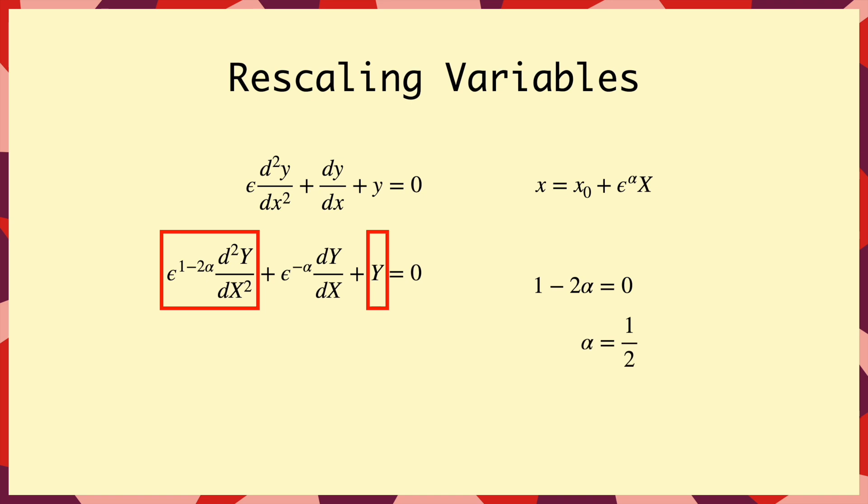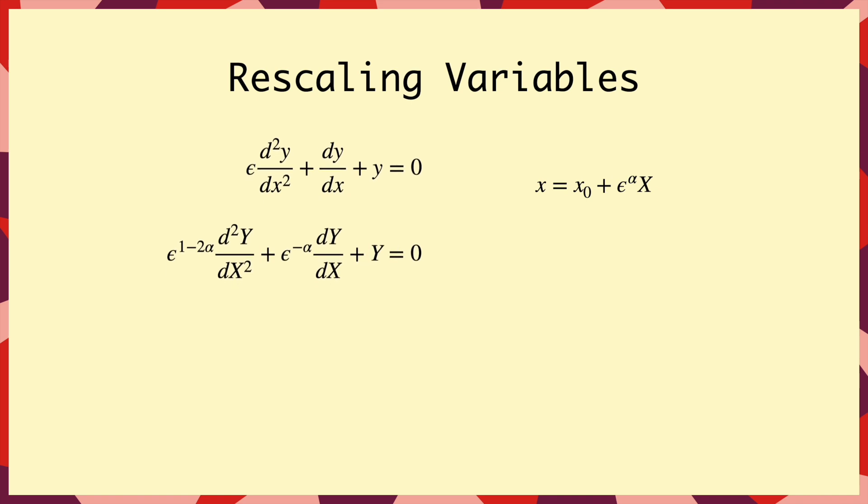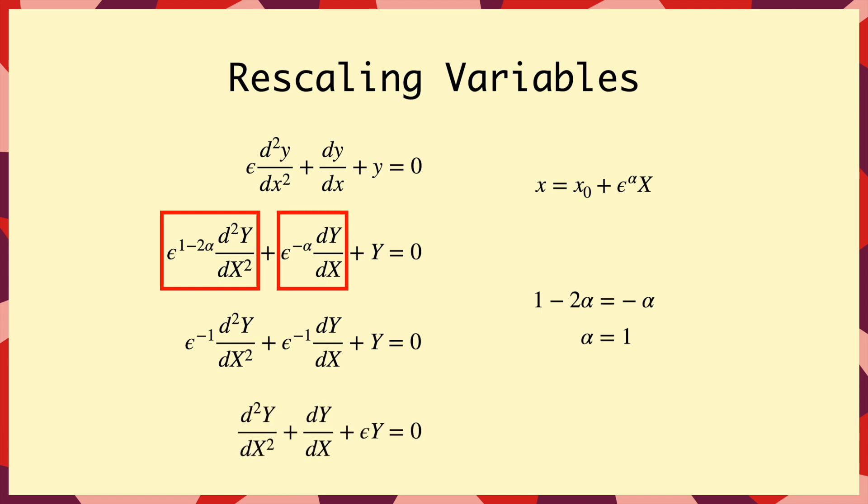But if we put that in, the other term now contains an ε^(-1/2). And since epsilon is small, ε^(-1/2) is big. So this term is bigger than the other two, and this hasn't worked. So instead, let's try balancing the first two terms. And for that we need 1 - 2α = -α. So alpha is one. So we can substitute that back in, multiply by epsilon, and we can see that this time the other term is smaller than the two balanced ones. So that's worked. Great.